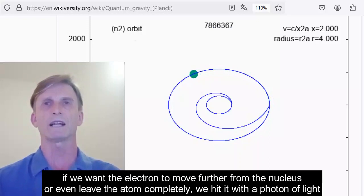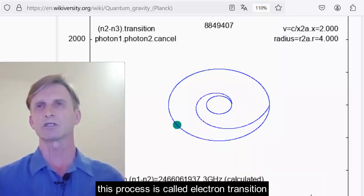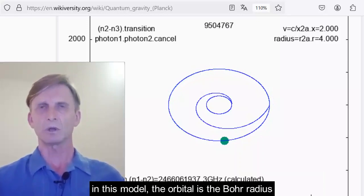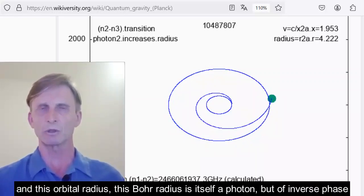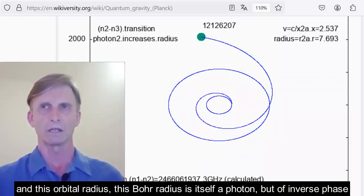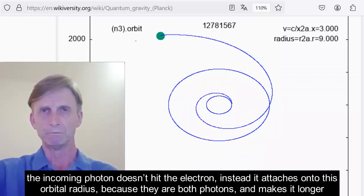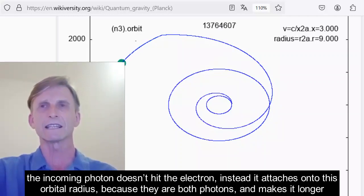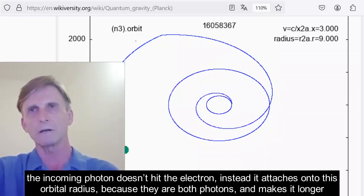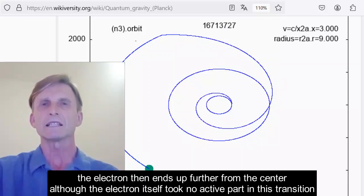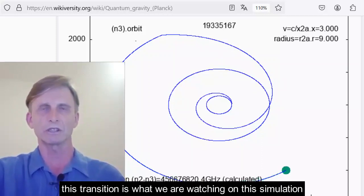If we want the electron to move further from the nucleus or even leave the atom completely, we hit it with a photon of light. But this process is called electron transition. In this model, the orbital is the Bohr radius. And this orbital radius, this Bohr radius, is itself the photon, but of inverse phase. The incoming photon doesn't hit the electron. Instead, it attaches onto this orbital radius because they're both photons and makes it longer. The electron then ends up further from the center, although the electron itself took no active part in this transition. This transition is what we're watching on this simulation.